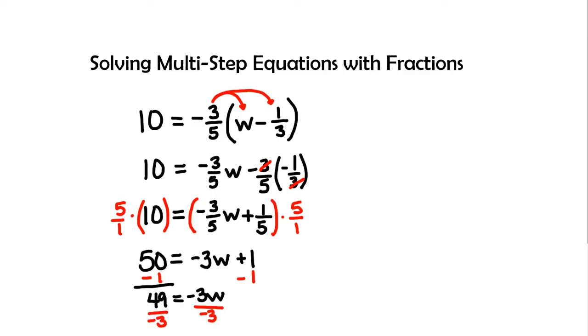Then I'm going to move this over here. This is going to come up for my answer. And so w will equal a negative 49 over three.